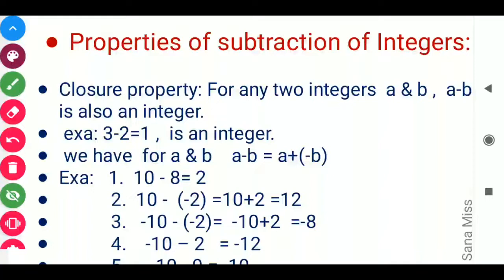First I would like to clarify what closure property is. As we know, for any two integers a and b, their subtraction — that is a minus b — is also an integer. For example, when you subtract 2 from 3, the answer is 1, and 1 is again a positive integer.